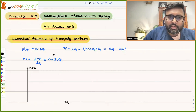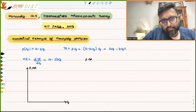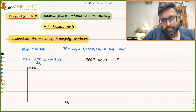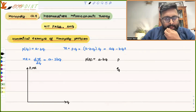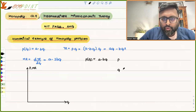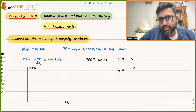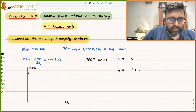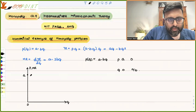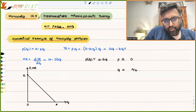Let us draw the demand function first. You have P(Q) = A - BQ. When Q is 0, P is A. When P is 0, Q is A/B.